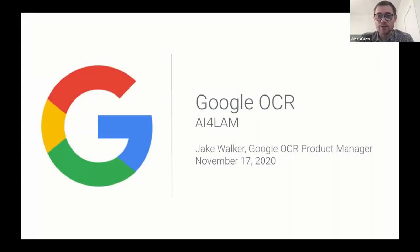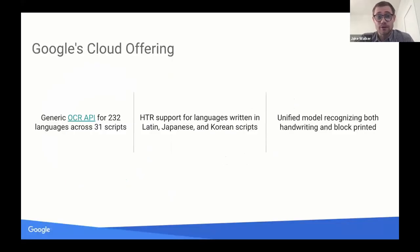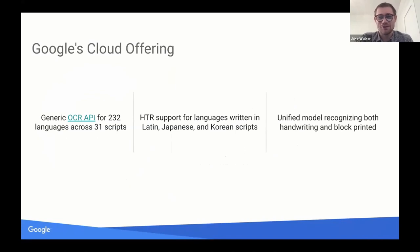My name is Jake, I'm the product manager for the Google OCR team. Google OCR is the research team that sits behind Google's Cloud Vision API. The Cloud Vision API is a generic OCR API that supports 232 languages across 31 scripts. We have handwriting support for a few scripts — Latin, Japanese, and Korean — with a unified model recognizing both, though that hasn't quite launched on the API yet but will be launching shortly.